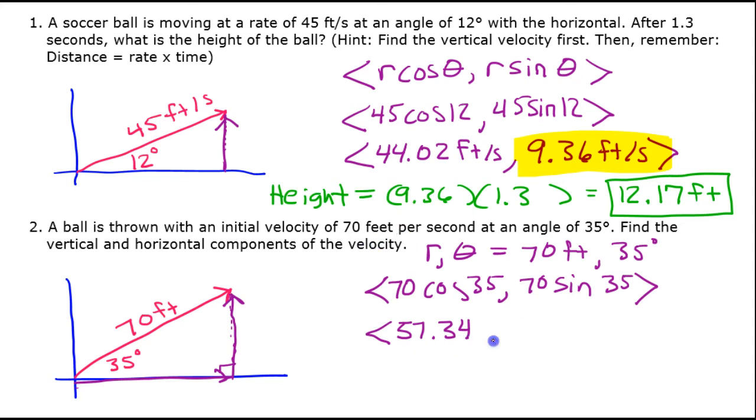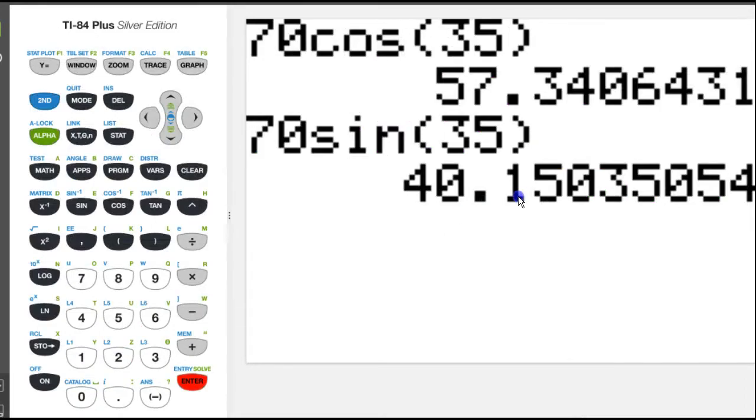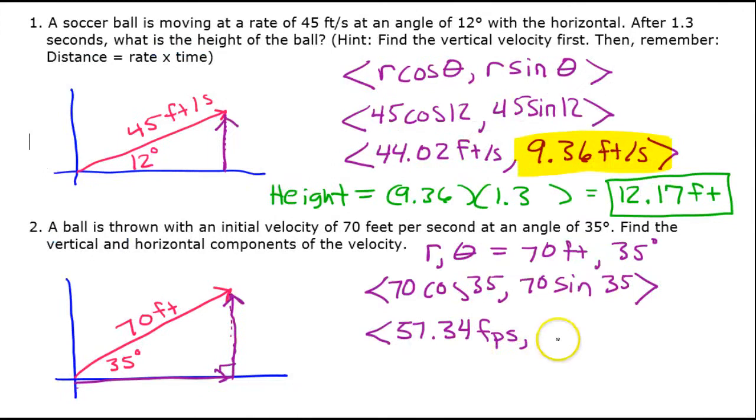So 57.34. So that's the horizontal component and this is feet per second. And 40.15. And that's it. So we have separated the vector into its horizontal and vertical components.